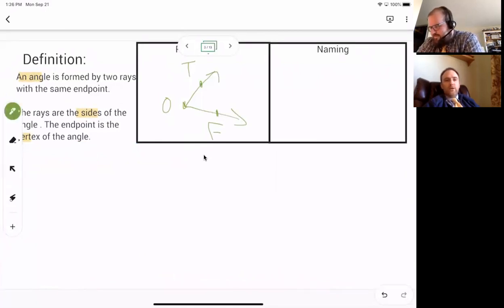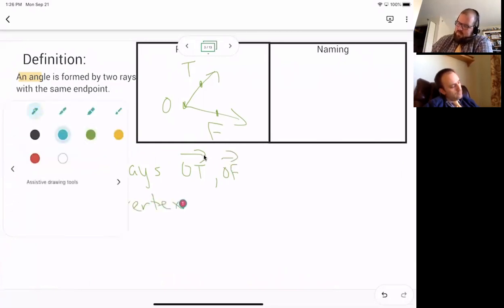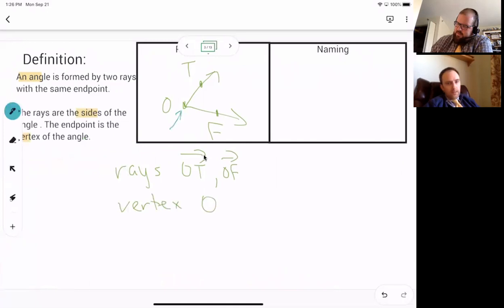I was trying to slide this over so it's a little bit easier for us to see and got really confused about the highlighting, but that's fine. So we've got rays of the sides. So my rays that in my lovely picture that I drew are OT and OF. The vertex is that point there. So the vertex is point O. It looks like the bottom of a V.